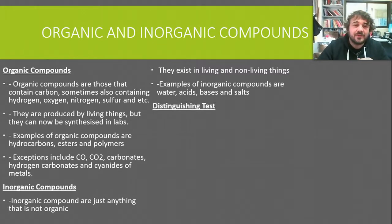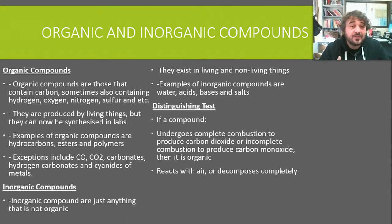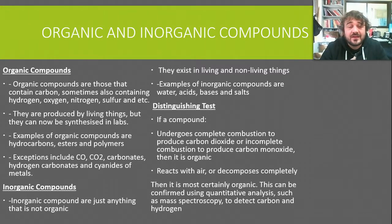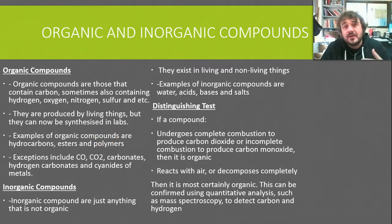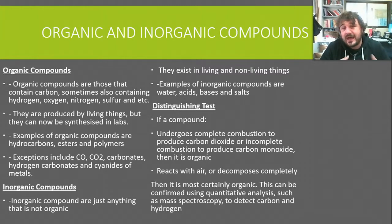So how do we test compounds and work out what's what? We get a compound and we burn it. If it undergoes complete combustion and produces carbon dioxide or carbon monoxide, then it's organic — only organic compounds do that. They also react with air and can decompose completely. When a metal reacts with air it oxidizes, but it won't decompose completely or vaporize off into the atmosphere. We can confirm these using quantitative tests like mass spectroscopy, which can determine if a compound contains carbon and hydrogen.